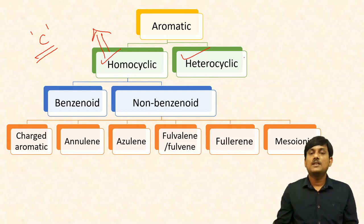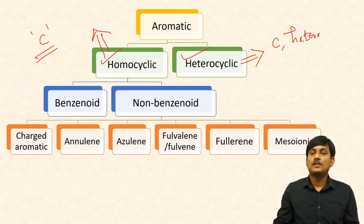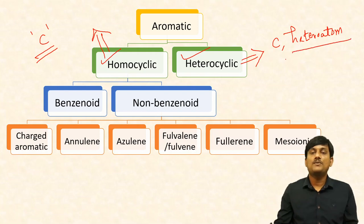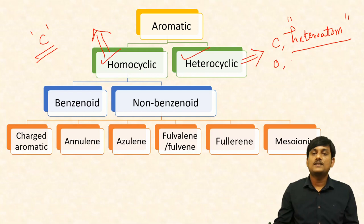In case of heterocyclic compounds, along with carbons you can find some heteroatoms. In case of heterocyclic aromatic compounds, you have heteroatoms such as oxygen, nitrogen, and sulfur.